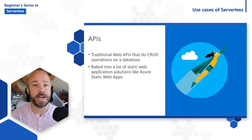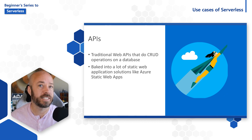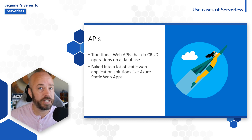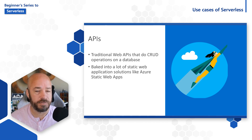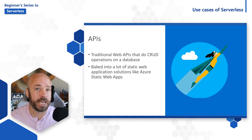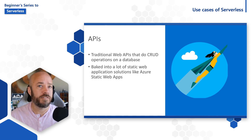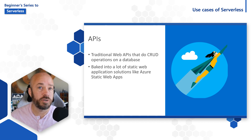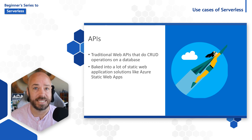Traditional APIs are a great option for serverless. These are endpoints that you create where a server acts as the API for your application. Often the server is just talking to a database and either retrieving data or making updates on behalf of the application. This is a particularly great option for single page applications built with front-end JavaScript frameworks like Angular, Vue, or React. In fact, Azure Functions is built into the new Azure Static Web Apps offering because it's just the easiest way to stand up an API for your single page application.